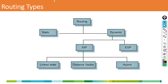There are two types of routing: static routing and dynamic routing. Default routing also exists but comes under static. In dynamic routing, it is classified into two types: IGP (Interior Gateway Protocol) and EGP (Exterior Gateway Protocol). Within IGP, it is further divided into three types: link state, distance vector, and hybrid protocol.